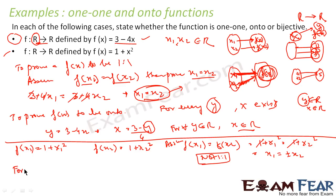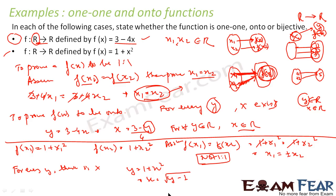Now for onto: for every y, there must be an x. We have y = 1 + x², so x = √(y − 1). But if y < 1, for example y = 0, then x = √(−1), which is an imaginary number — not a real number. We do not have a real x for any real y less than 1.